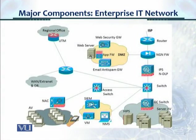This is another view of the same diagram showing the enterprise IT network architecture. As a reminder, we have the router, the firewall, switch, data center switch, access switch, and then the UTM, along with various security tools and devices.